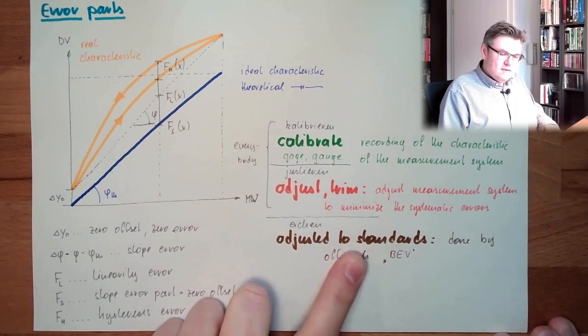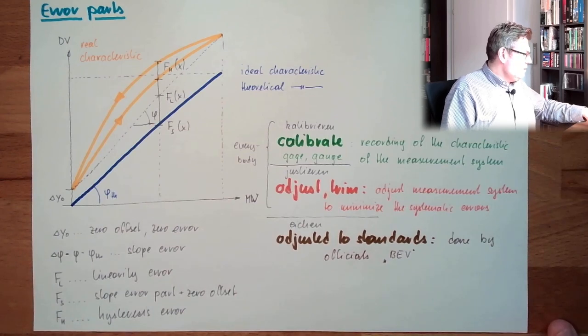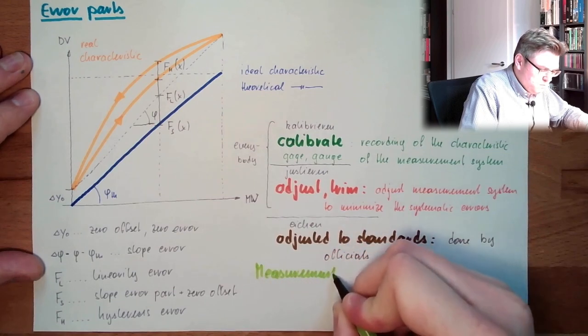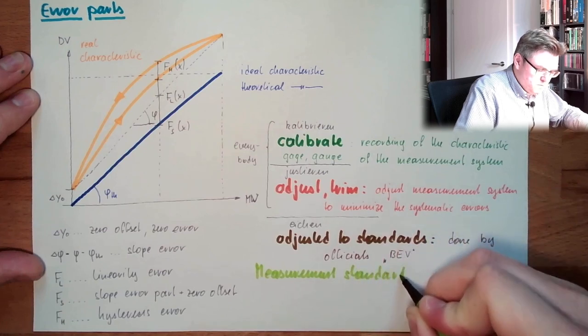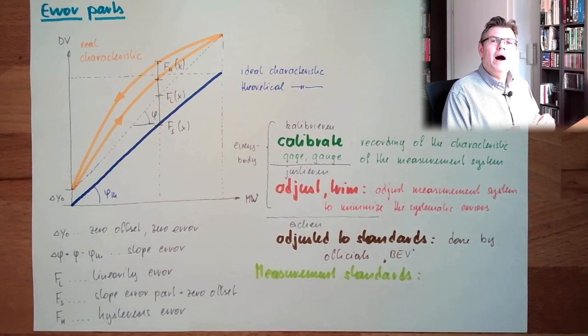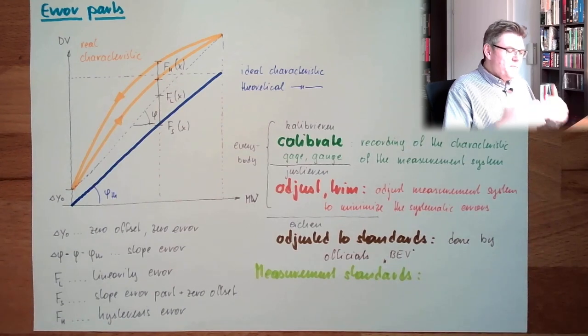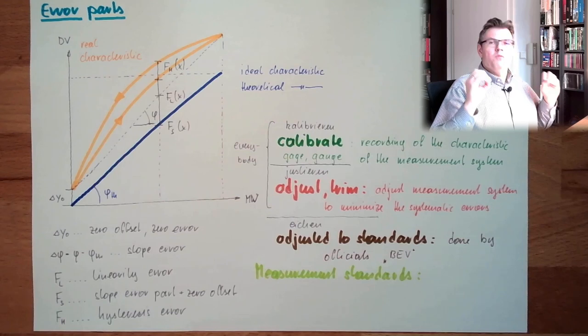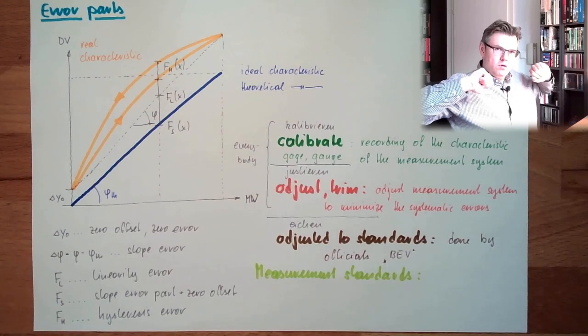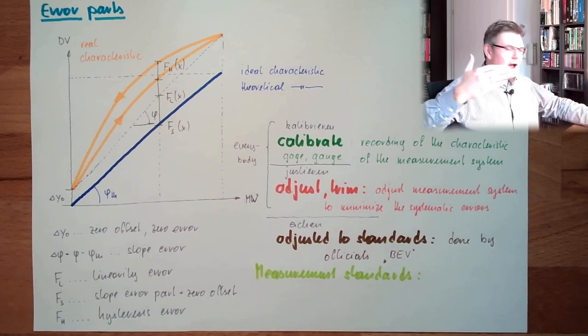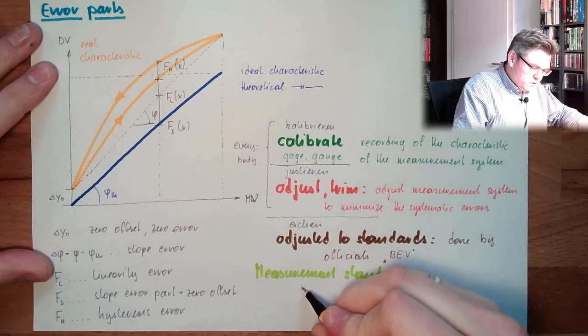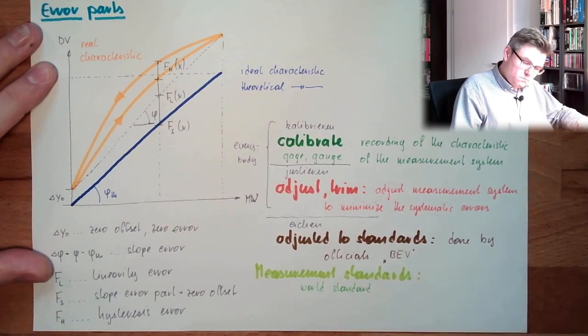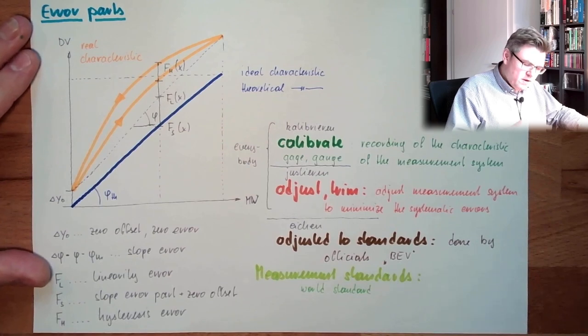What are the standards? So they are measurement standards. In German they are called Normale, measurement standards. There are different measurement standards. There's the world measurement standards. These are kept at some locations in the world. This has the highest level. This is one kilo, this is whatever, there's a world standard.